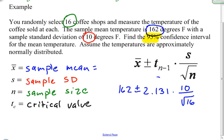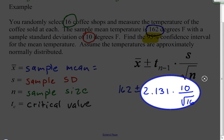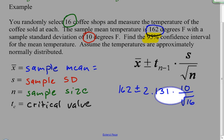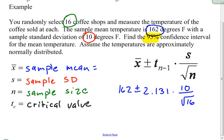Everything on this side of the plus or minus is called the margin of error. So the margin of error, if I were to calculate just that, ends up being about 5.328. I have faith in the fact that you will trust my calculations there.